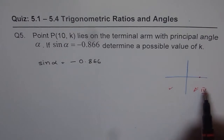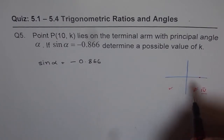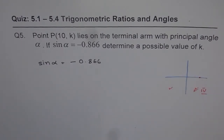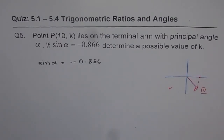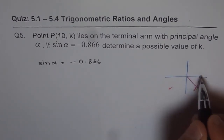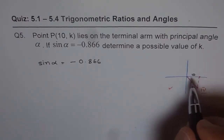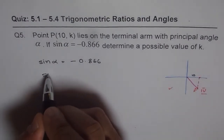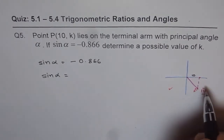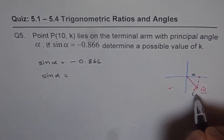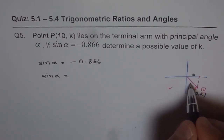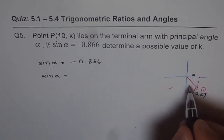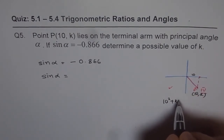We know we are in quadrant 4. Let's figure out the value of k. Let me arbitrarily draw a terminal arm. We don't know the value of k — let's say this is the point. What we know is that the x-value is 10, so this side is 10. The coordinate is (10, k), and the hypotenuse is going to be equal to the square root of 10 squared plus k squared.